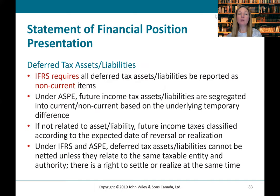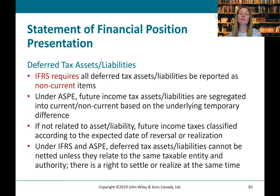IFRS requires all deferred tax assets and liabilities to be reported as non-current items. Under ASPE, future income tax assets and liabilities are segregated into current or non-current. If not related to an asset or liability, future income tax is classified according to the expected date of reversal or realization. Under both IFRS and ASPE, deferred tax assets and liabilities cannot be netted unless they relate to the same taxable entity and authority, and there is a right to settle net.